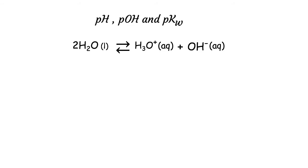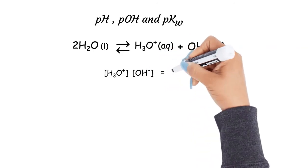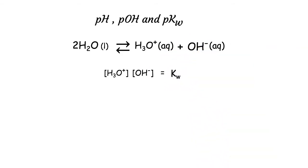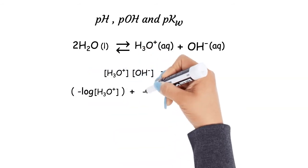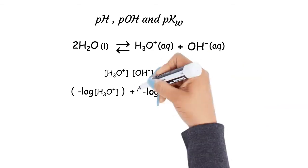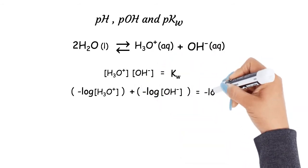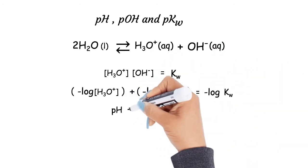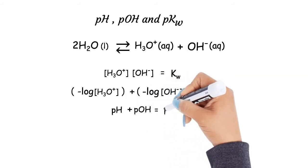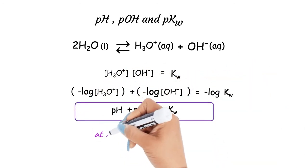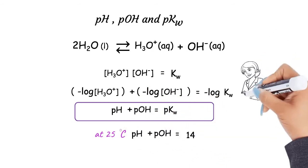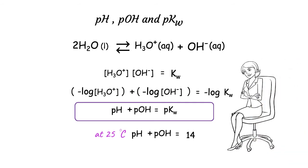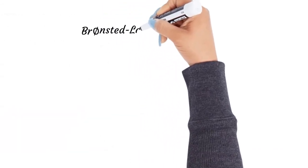Kw is the product of the hydronium ion concentration and the hydroxide ion concentration. By taking the negative log of both sides of the equation, we get the negative log of H3O⁺ concentration plus the negative log of OH⁻ concentration equals the negative log of Kw. Therefore we can write pH plus pOH equals pKw. At 25°C, pH plus pOH equals 14.